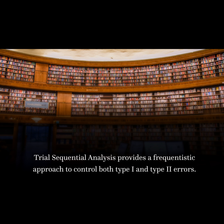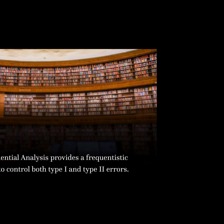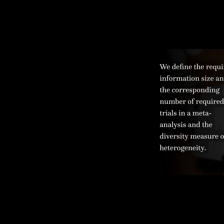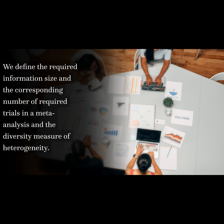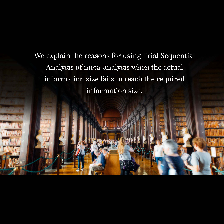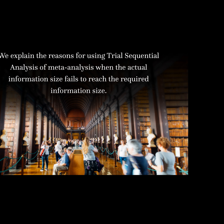Trial sequential analysis provides a frequentistic approach to control both type I and type II errors. We define the required information size and the corresponding number of required trials in a meta-analysis and the diversity measure of heterogeneity. We explain the reasons for using trial sequential analysis of meta-analysis when the actual information size fails to reach the required information size.